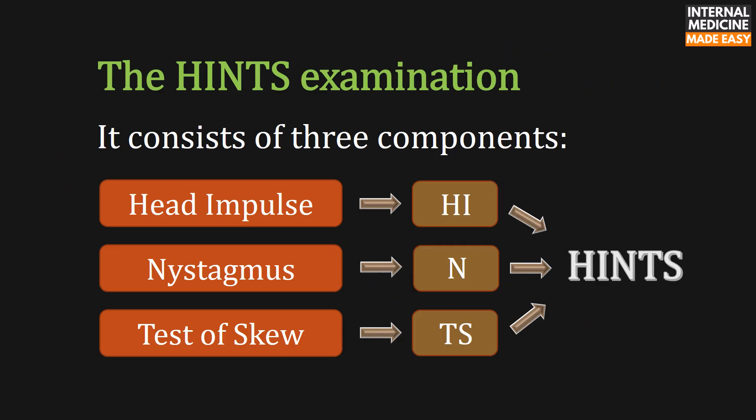The HINTS examination consists of three components: head impulse, nystagmus, and test of skew. The acronym HI indicates head impulse, N indicates nystagmus, and TS indicates test of skew.